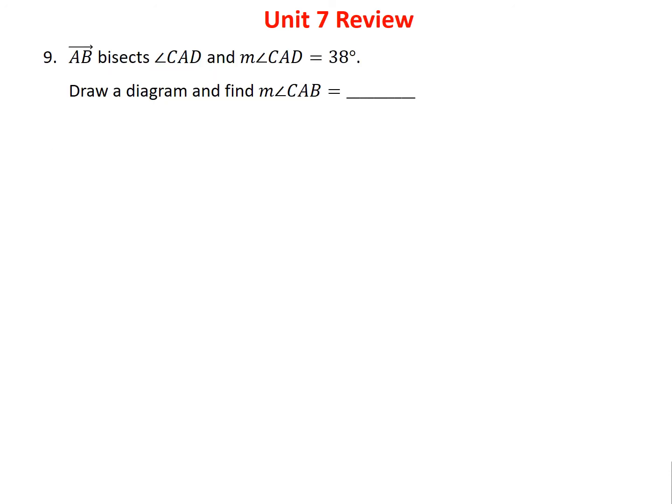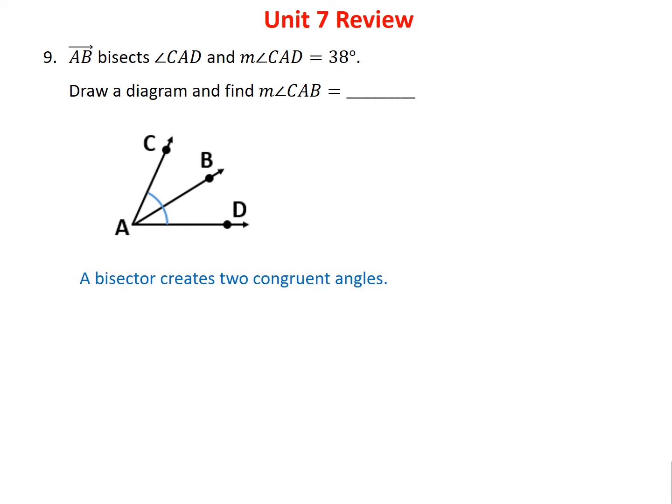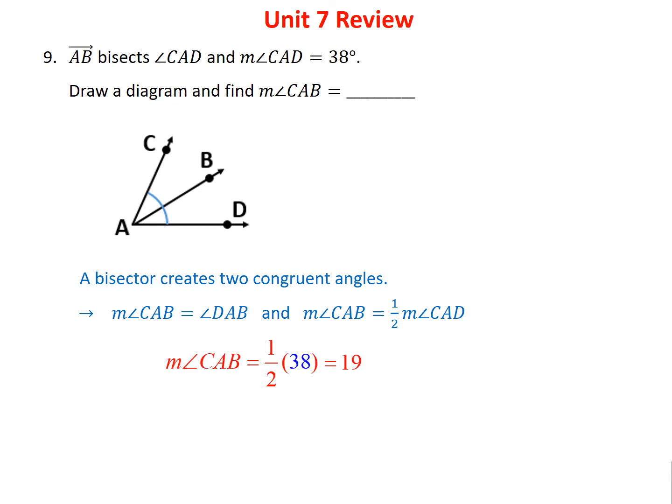Problem 9 says that ray AB bisects angle CAD, and angle CAD is 38 degrees. Draw a diagram showing the 38-degree angle cut in half. If ray AB bisects angle CAD, then angle CAB is half of 38 degrees, which is 19 degrees.